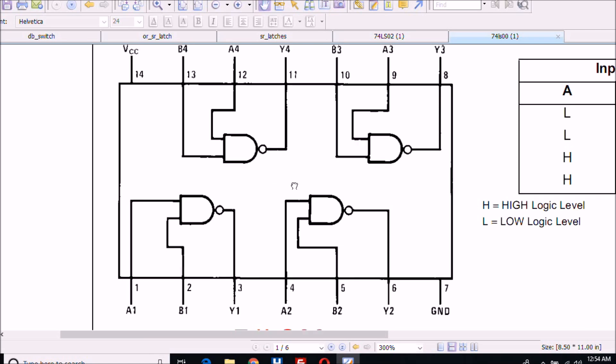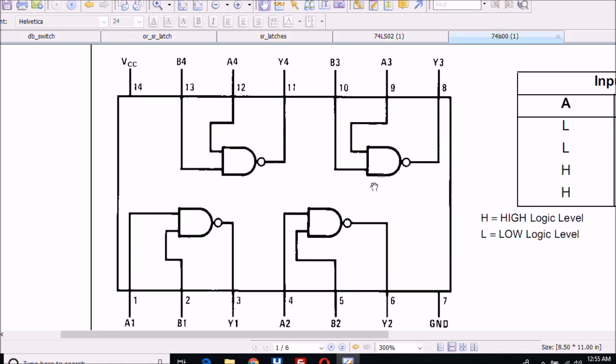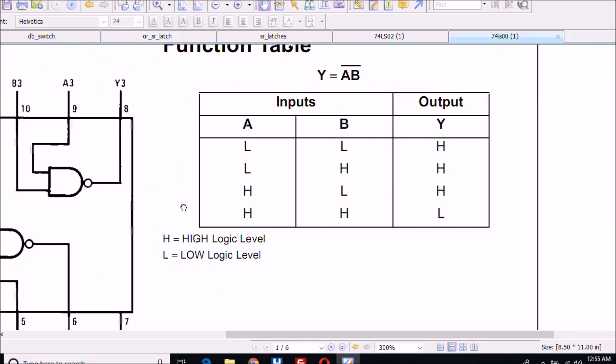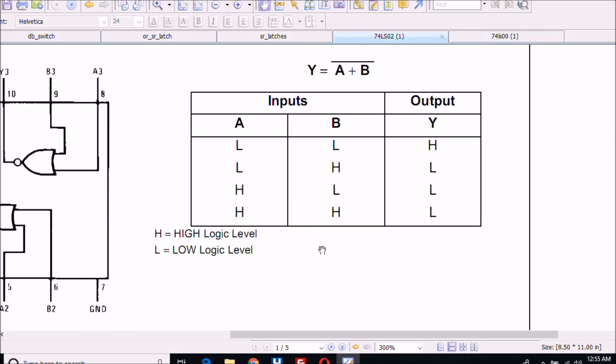The 74LS00 consists of four complete two-input NAND gates. Your truth table is as follows: basically, any combination other than a high and a high on A and B, which will produce a low, all the others will produce a high output. Compare this with the truth table for 74LS002. Complete opposites, aren't they?